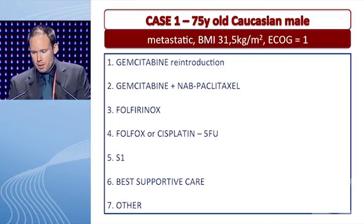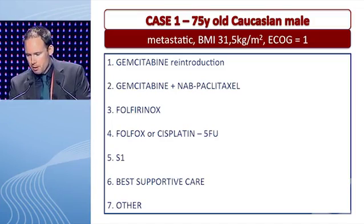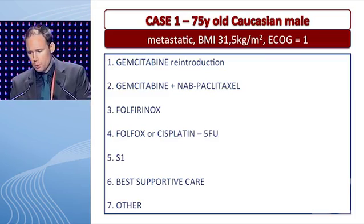Our patient is now becoming metastatic after 11 months of therapy break, but is still performing quite well. What would be your treatment of choice? Would it be to reintroduce gemcitabine, or since he has become metastatic, intensify therapy with gemcitabine with nab-paclitaxel, or FOLFIRINOX, or a combination of a platinum with 5-FU, or an oral fluoropyrimidine like S1? Or would you consider offering best supportive care?